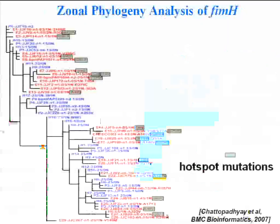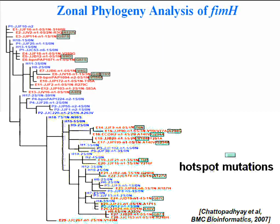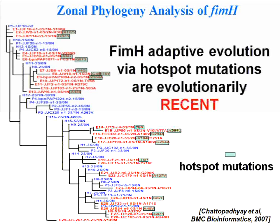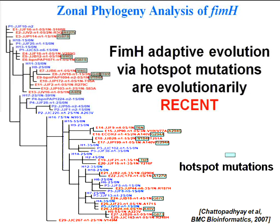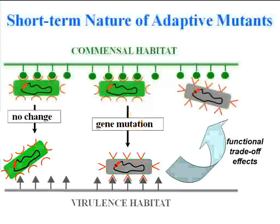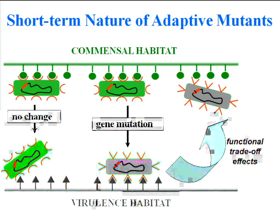We used this zonal phylogeny to analyze FimH over a larger dataset. The main message from this tree is two-fold: there are a large number of hotspot mutations at many different hotspot positions (shown in black), and almost all of them are found to be of recent nature. So FimH adaptive evolution proceeds through accumulation of hotspot mutations. The question is whether it is just recent or recurrently recent — meaning these mutations appear in the population, adapt, and stay for the short term, then disappear, and later reappear along another evolutionary background.